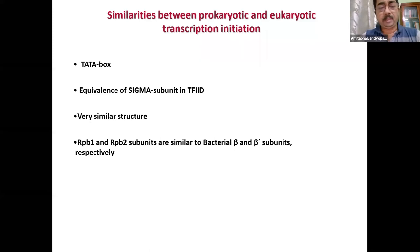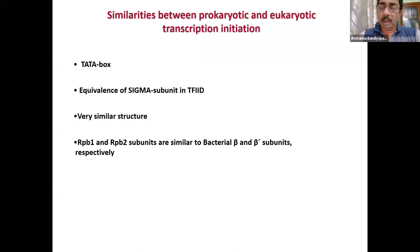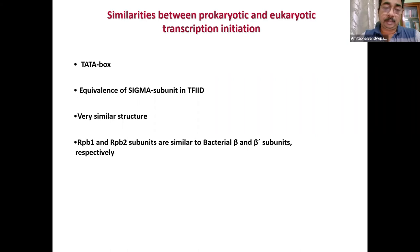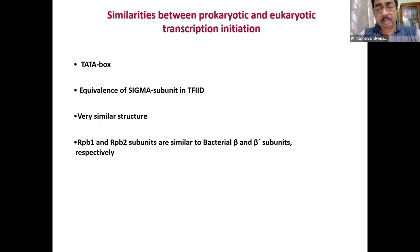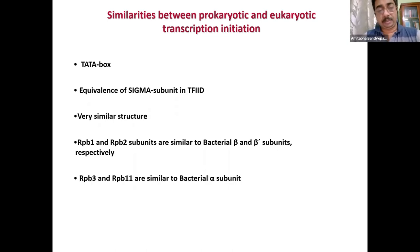RNA polymerase subunits RPB1 and RPB2 are similar to bacterial beta and beta prime subunits. RPB stands for RNA Polymerase B — 'B' is alternatively used as '2', since mRNA transcription is done by RNA polymerase 2. In eukaryotes there are at least 3 polymerases; people now say there are 5. RPB1 and RPB2 — subunits 1 and 2 of RNA polymerase 2 — are very similar to bacterial beta and beta prime. RPB3 and RPB11 are very similar to bacterial alpha subunits.